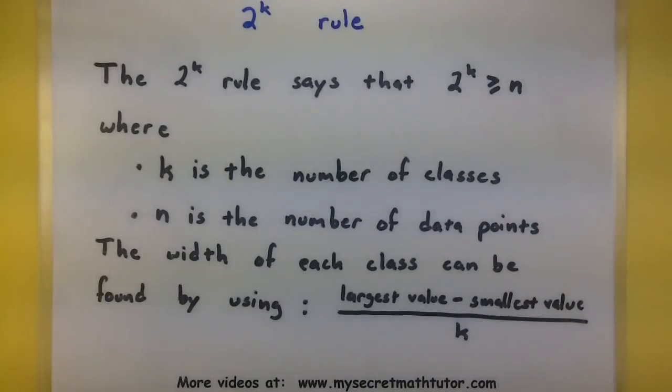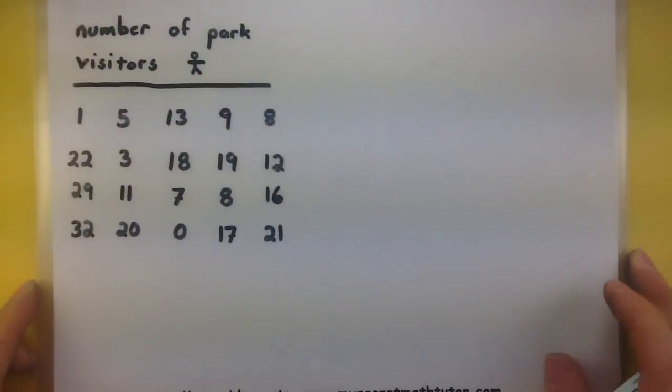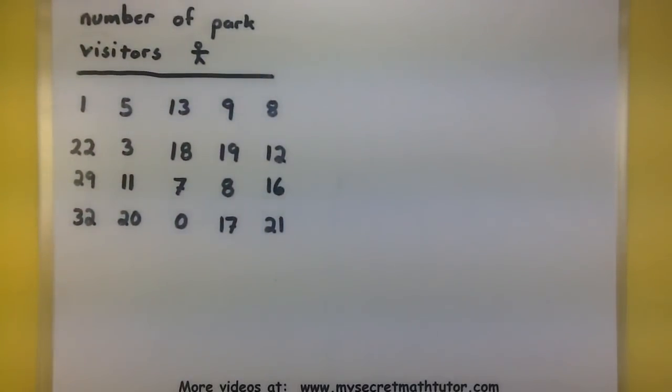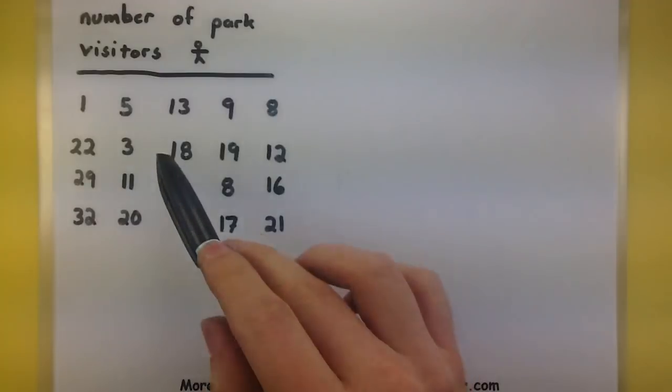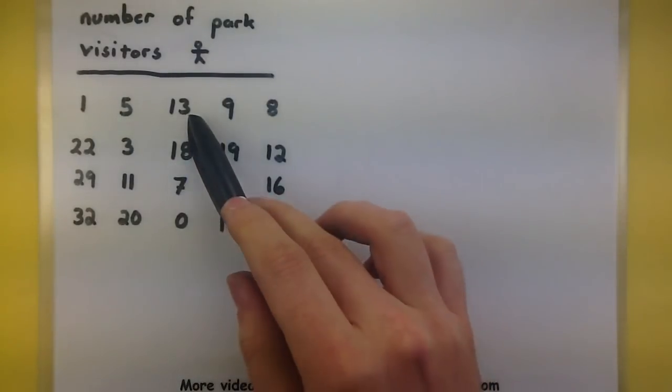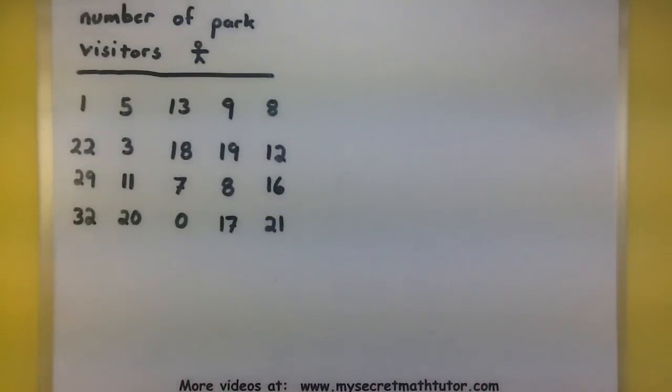Let's look at some actual data to see the 2^k rule in action. So here in my data, I have the number of visitors that go to a certain park. I can see that on the first day I had 1 visitor, second day 5 visitors, third day 13 visitors, and so on and so forth. And as you can see, I have 20 different data values and they take on many different things. I got 1, 5, 22, 3, and so this is a great application of using classes to help group things together.